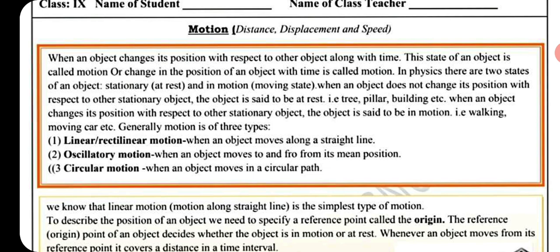In physics there are two states: an object stationary at rest, and an object in a moving state. When an object does not change its position with respect to another stationary object, it is said to be at rest. When an object changes its position with respect to another stationary object, it is said to be in motion.